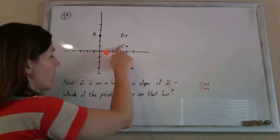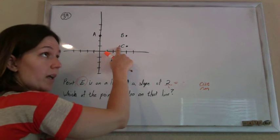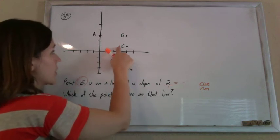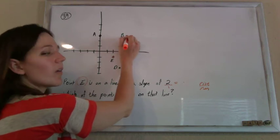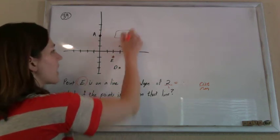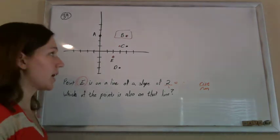If I rise up 2 and run over 1 again, I'll still be on my line. So from that point, if I rise up 2 and run over 1, oh, there it is. That's B. That's my answer.